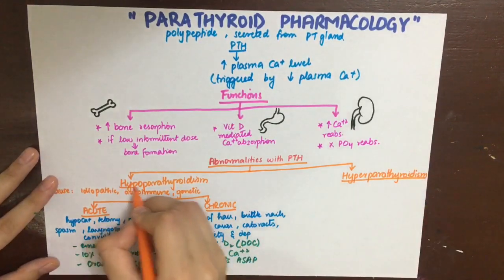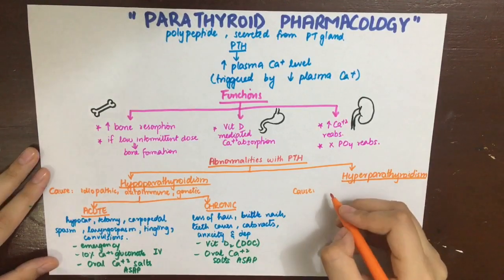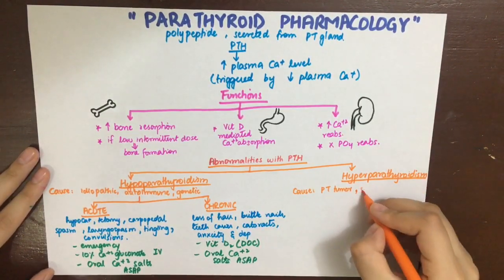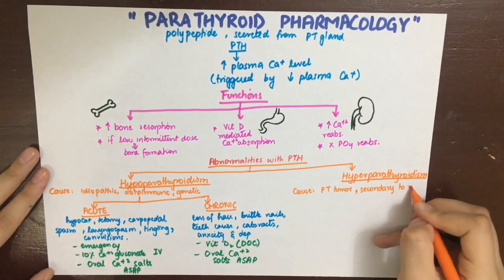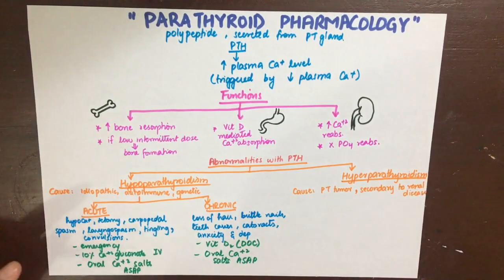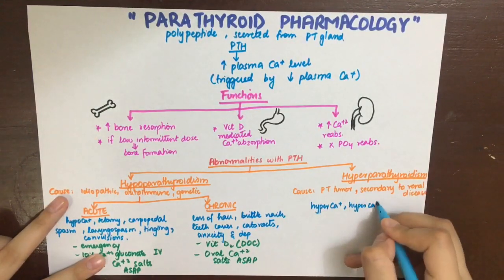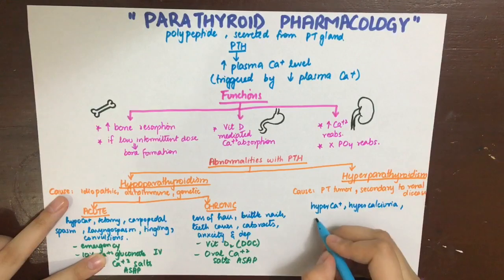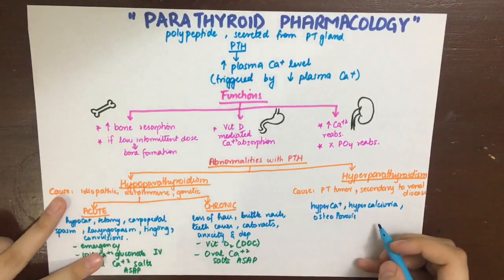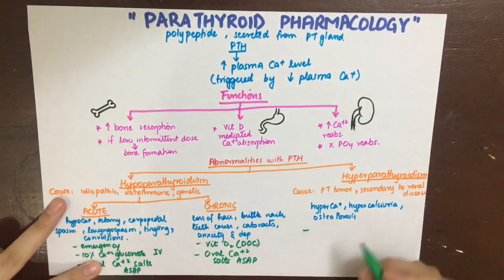Hyperparathyroidism can also occur secondary to kidney failure. Since vitamin D requires 1-alpha hydroxylation in the kidney to become active, when this activation fails, the parathyroid gland becomes overactive and increases secretion of parathyroid hormone. Symptoms include hypercalcemia, hypercalciuria, and osteoporosis.